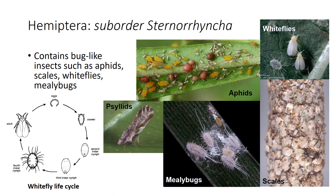Suborder Sternorrhyncha contains bug-like insects such as aphids, scales, psyllids, whiteflies, and mealybugs. This group also has a beak arising from the back of the head and contains some of the oddest-looking insects. They cause some of our largest plant problems and are major pests. Many vector plant pathogens, such as the silverleaf whitefly vectoring the tomato spotted wilt virus, or the Asian citrus psyllid vectoring the bacterium causing citrus greening. For whiteflies, mealybugs, and scales, the first instars are a crawler stage with a lot of movement and tend to be the most vulnerable stage for control. For scales, they stop moving after that first stage.